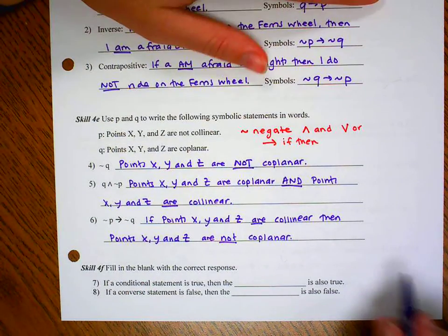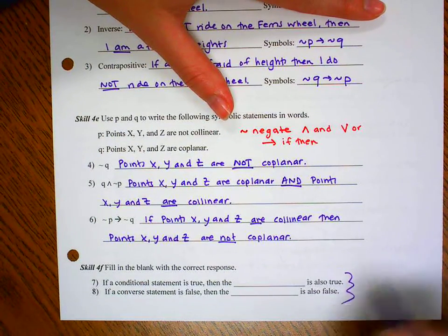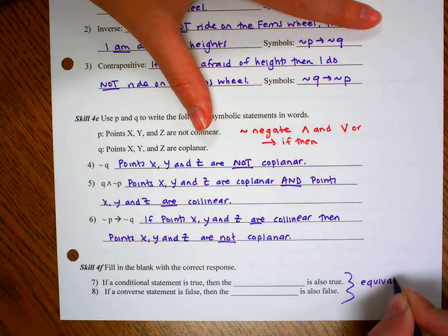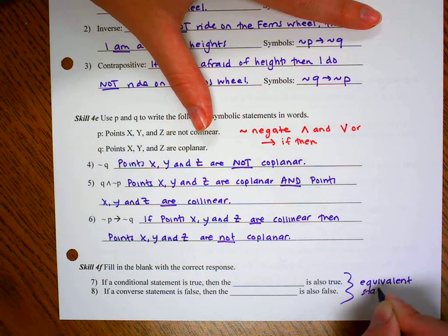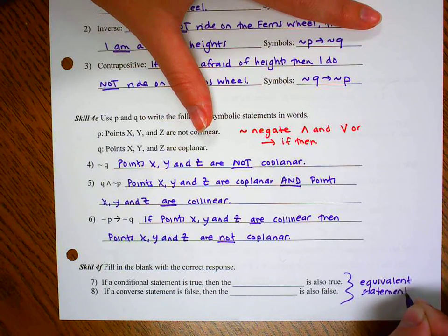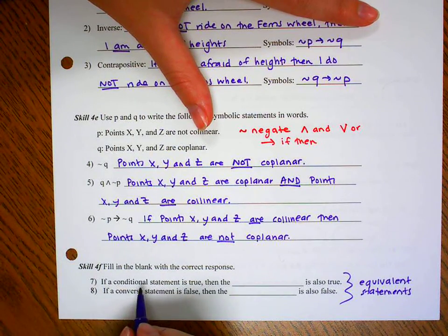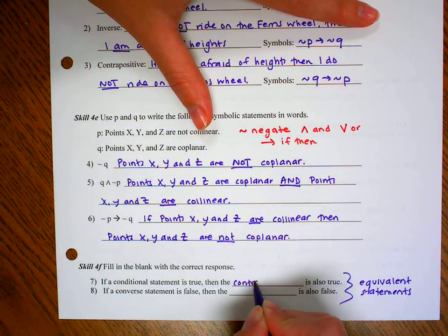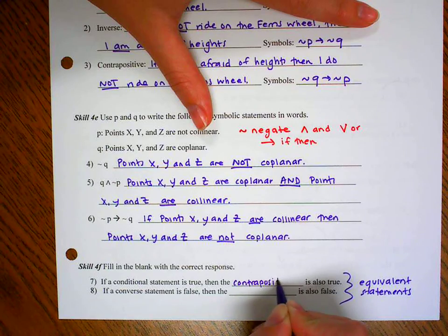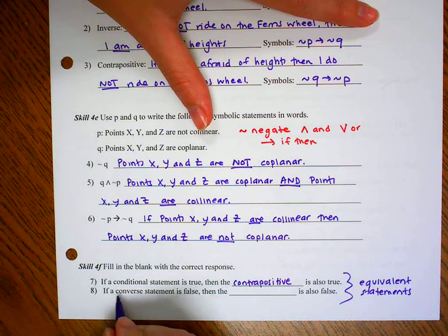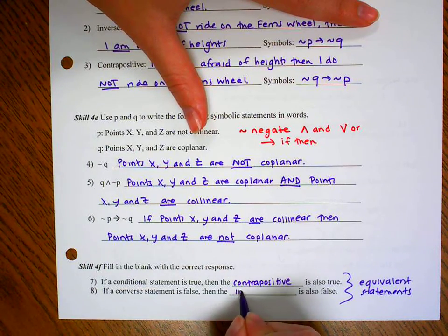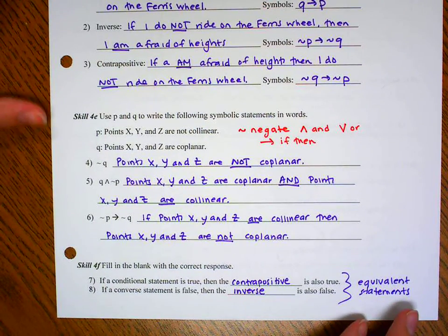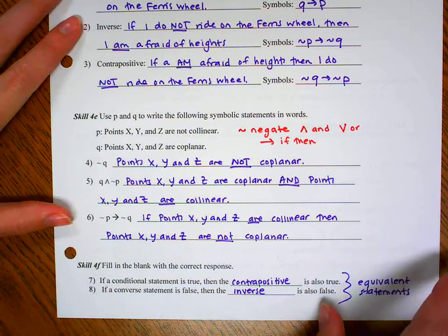Down here, fill in the blank with the correct response. On the test, it might ask for statements, equivalent statements. We also call them truth value buddies. What's the equivalent statement of a conditional? If the conditional is true, then the contrapositive will also be true. If the converse is false, then the inverse, its truth buddy, will also be false. If you need to pause and finish writing this down, you can.